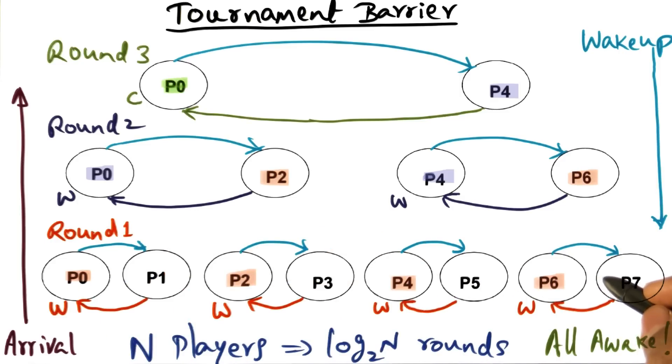Whereas if you recall in the tree barrier, we need a fetch and phi operation in order to atomically decrement the count variable. That doesn't exist in the tournament barrier. That's another good news.